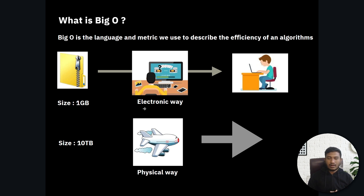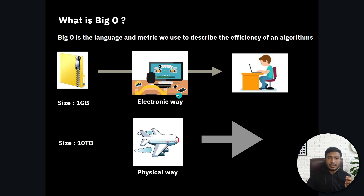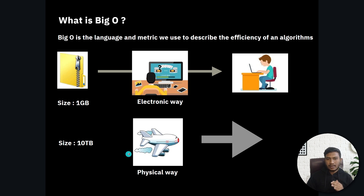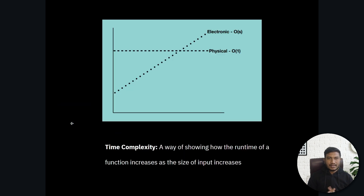In the first method, as the input size increases, the delivery time also increases. In method two, as input size increases, the delivery time remains constant — it will always take two hours to reach the destination if you're going physically.